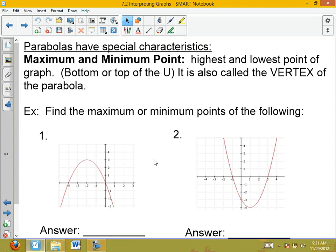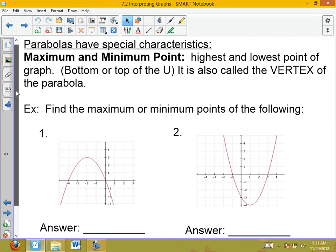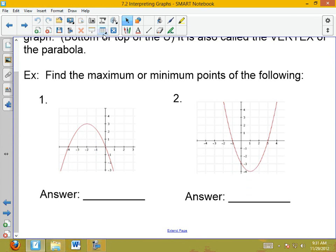We're going to be talking about parabolas today. Parabolas have a minimum and a maximum point. That's what we're going to try to identify today. It's either the top of the U or the bottom of the U. Maximum means the highest point of the graph. This has a maximum point. This right here is a minimum point.